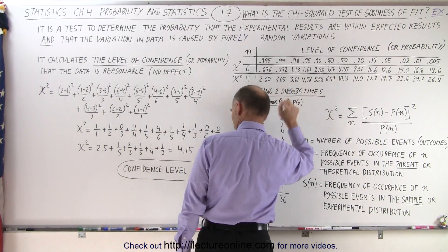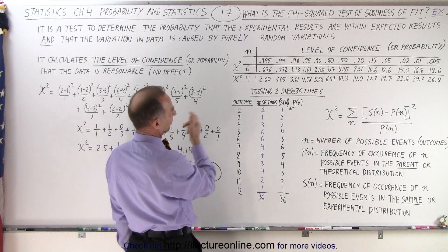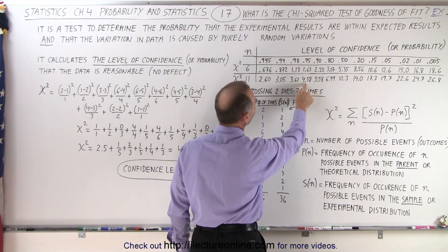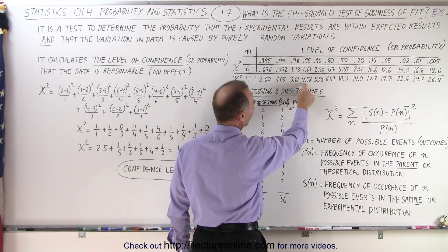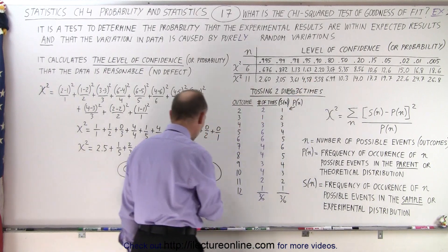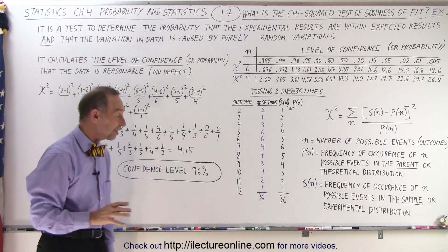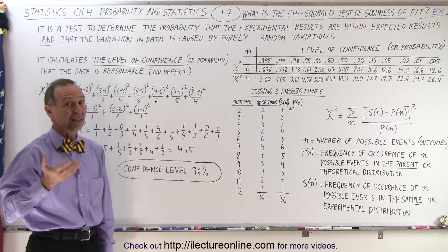Let's see, 4.15. Yes, okay, there we go, 4.15. So, it's a little bit closer to 4.58 compared to 3.61. So, we assume that it's about a 96% confidence level, which is a very high level.